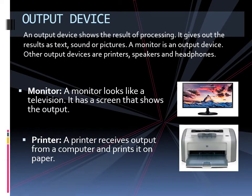Output device. An output device shows the result of processing. It gives out the result as text, sound, or pictures. A monitor is an output device. Other output devices are printers, speakers, and headphones.